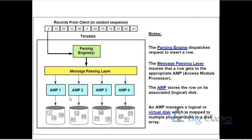The Parsing Engine is the one that performs syntax and semantics checking for every request submitted to the system. The Parsing Engine also has the intelligence to optimize the request — to determine how efficiently a request can be executed and generate an execution plan. Apart from that, it also has the intelligence to distribute data. If one million records need to be inserted into a single table, the Parsing Engine distributes the data across the system.